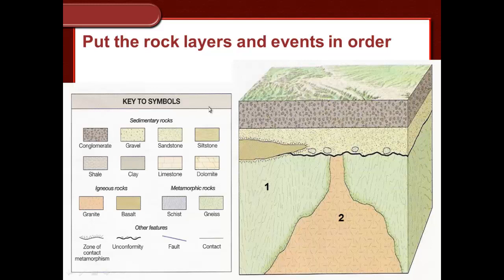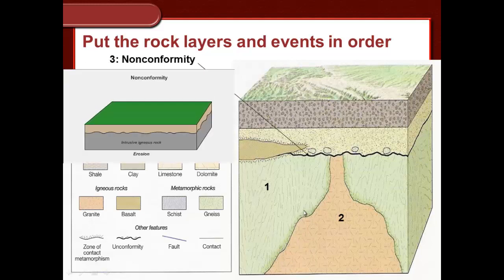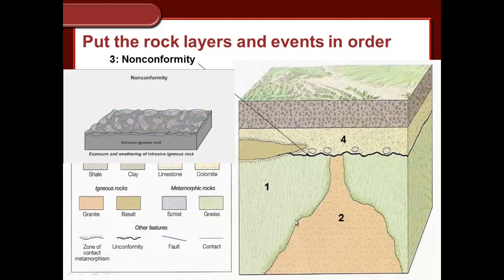Since this igneous intrusion here, which is known as a sill because it looks like a window sill - it's level with the layers - since this cuts into this layer we know it's younger than that layer. And we know it's also younger than the erosional feature here because it's cutting into that. And since this is non-sedimentary rock below and in contact with sedimentary rock, we know that this is a non-conformity, which is the third event.